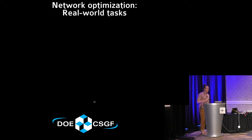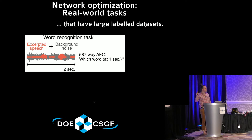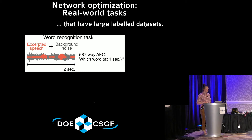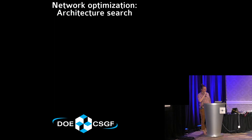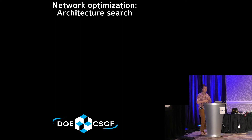We trained our networks on two real-world tasks with large labeled datasets. One was a word recognition task: speech was excerpted from large labeled corpora and mixed with real-world background noise such as a busy restaurant or a subway stop. The network received a two-second clip and had to identify which word occurred in the middle, out of a dictionary of about 600 possible words. The second task was musical genre recognition. We then sought to create a unified single network performing both tasks.